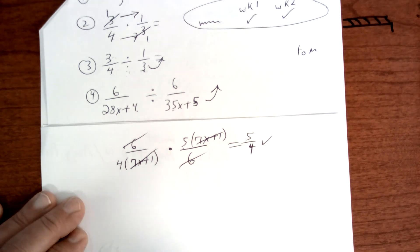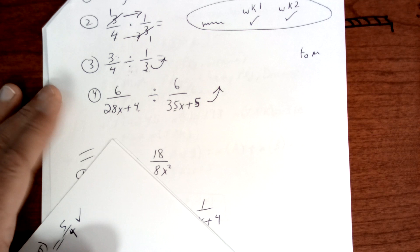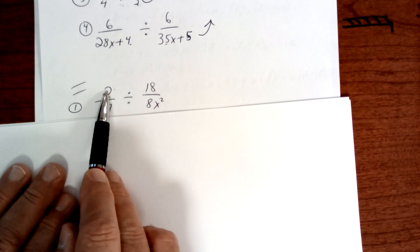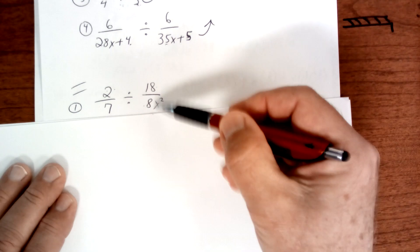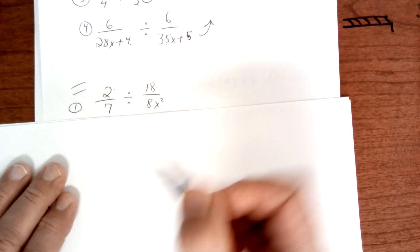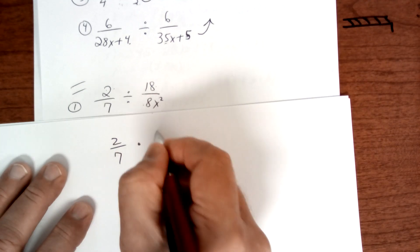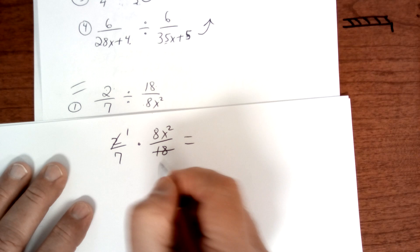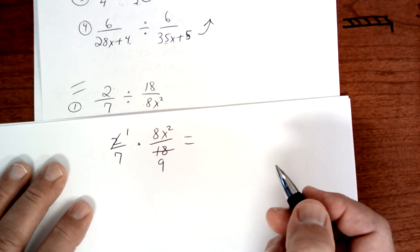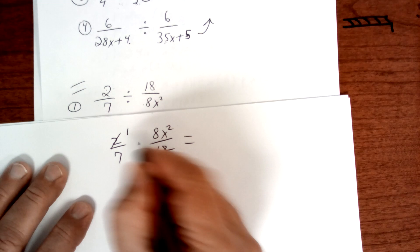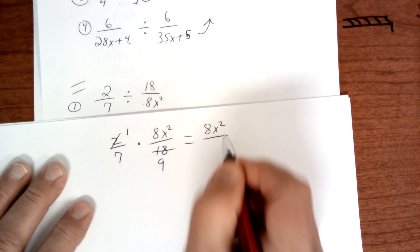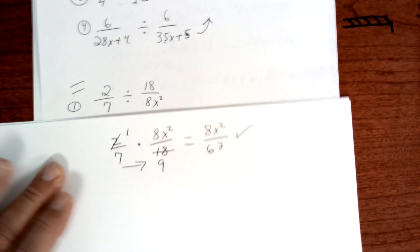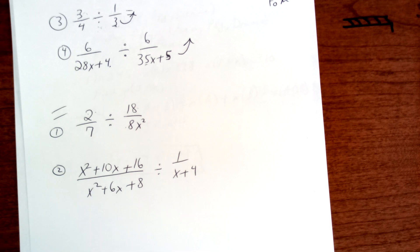This one is on your worksheet today. It's division, so don't reduce yet. You can reduce straight up and down, but not across. To be safe, I'm going to flip it first. Now that I've flipped it, I reduce: 2 goes into 2 once, and 2 goes into 18 nine times. I don't see anything else to reduce, so 1 times 8x squared is 8x squared, and 7 times 9 is 63. Check your answers — I'll show them later in the day.